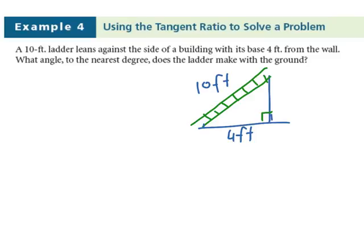And we're trying to find the angle right here that the ladder makes with the ground. So normally what we would do is we would label the triangle A, B, C. You can use any letters you wish.